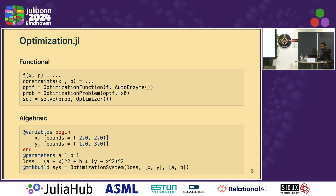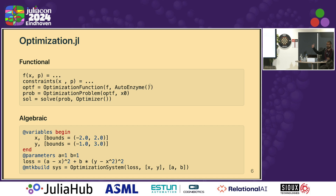So what does optimization.jl offer? The aim is to extend the overarching goal of SciML, where we are trying to build symbolic-numeric tools and be able to use them depending on your use case, and also to improve each other. There are a lot of things that you should be doing algebraically, and a lot you should be doing numerically, but mixing them can really help you. So optimization.jl basically has two interfaces: the functional interface, which is the oracle-based API, and the algebraic interface through ModelingToolkit. This has been the enabler for a bunch of development I'll talk about next.